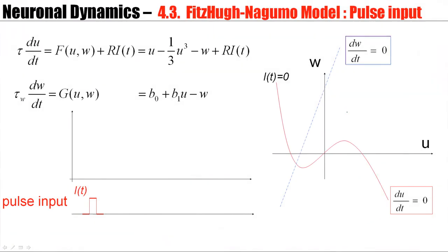Here I've written again the equations of the FitzHugh-Nagumo model. There is a u nullcline defined by du/dt equals zero, which is given by a cubic function. That's the red curve here.